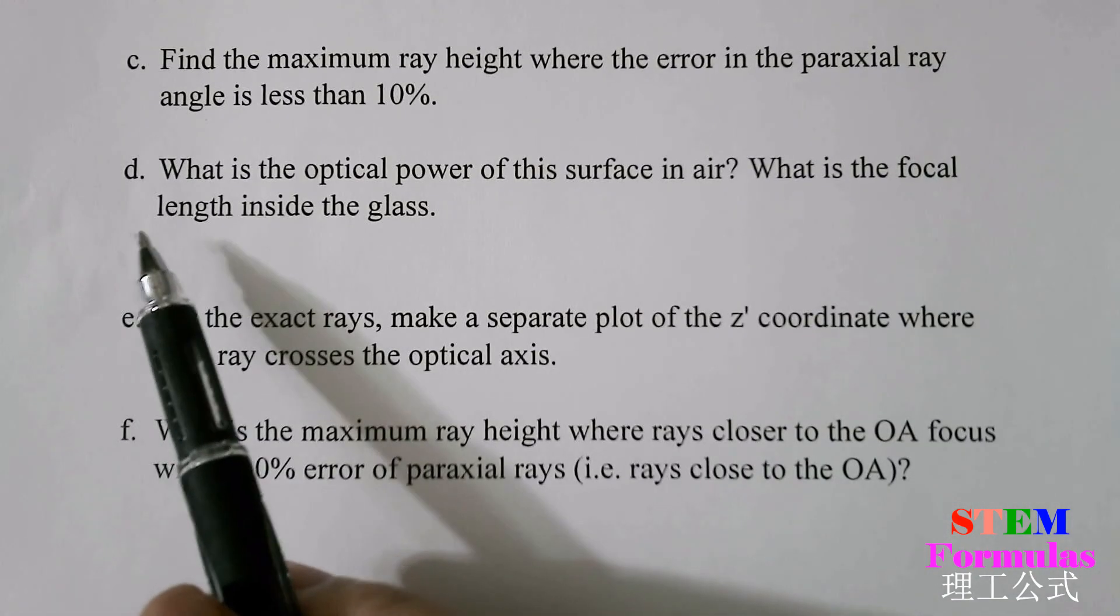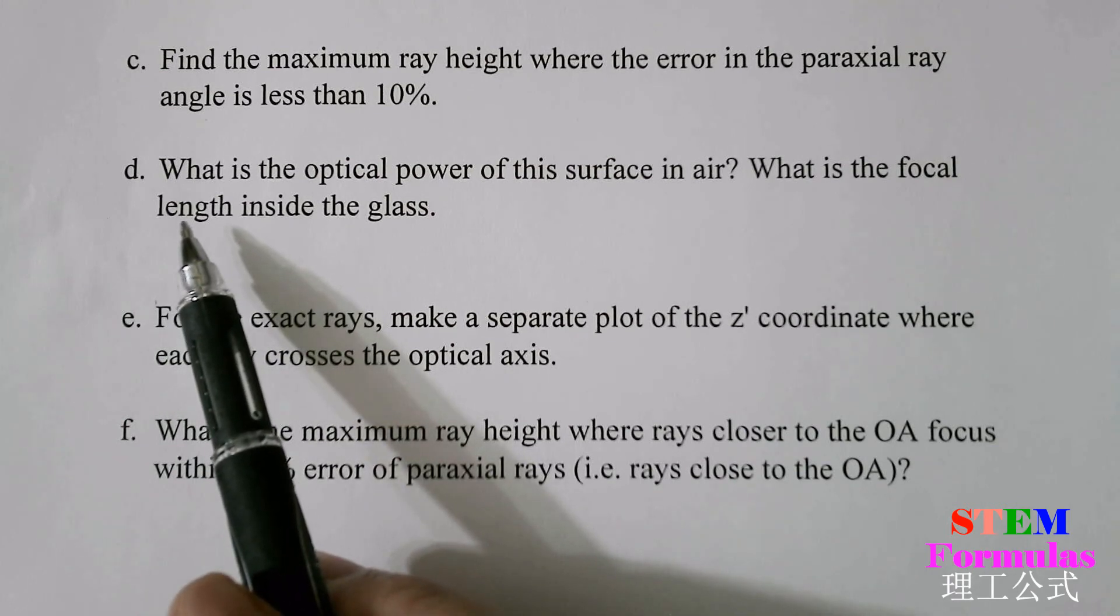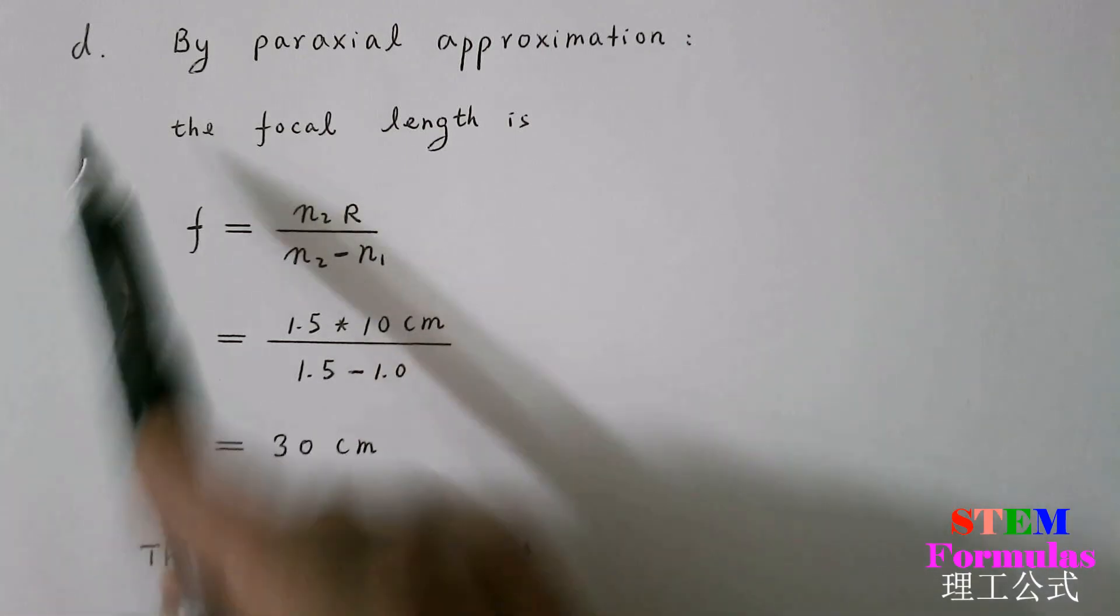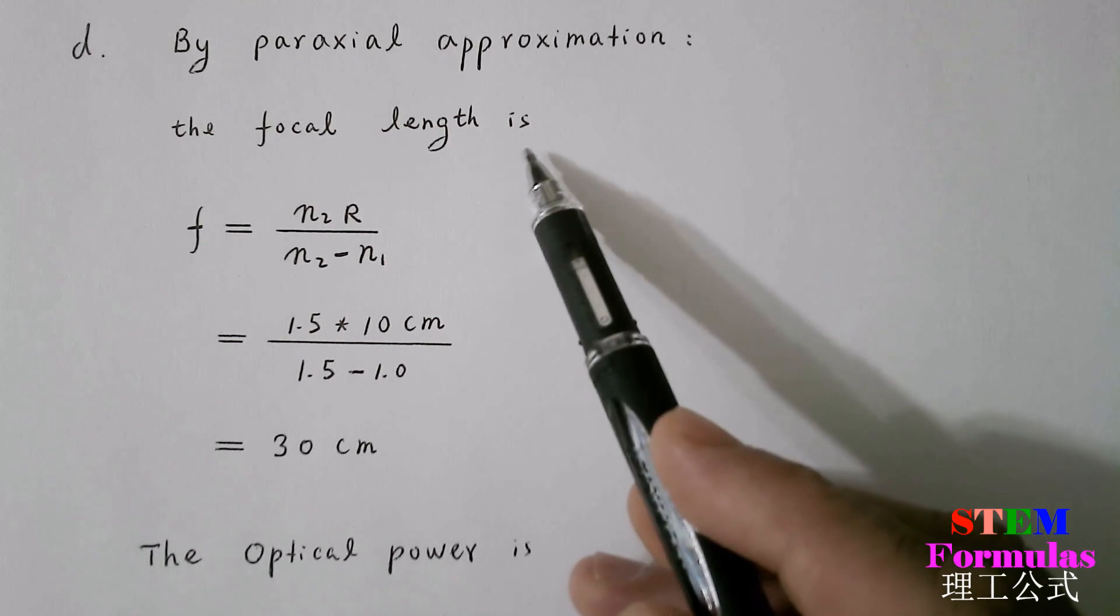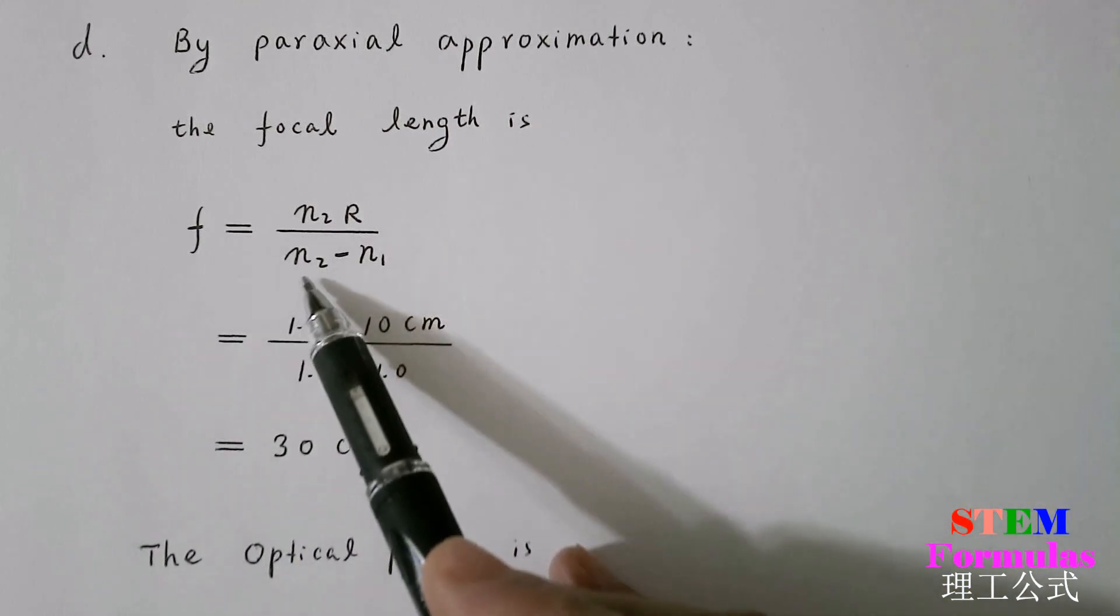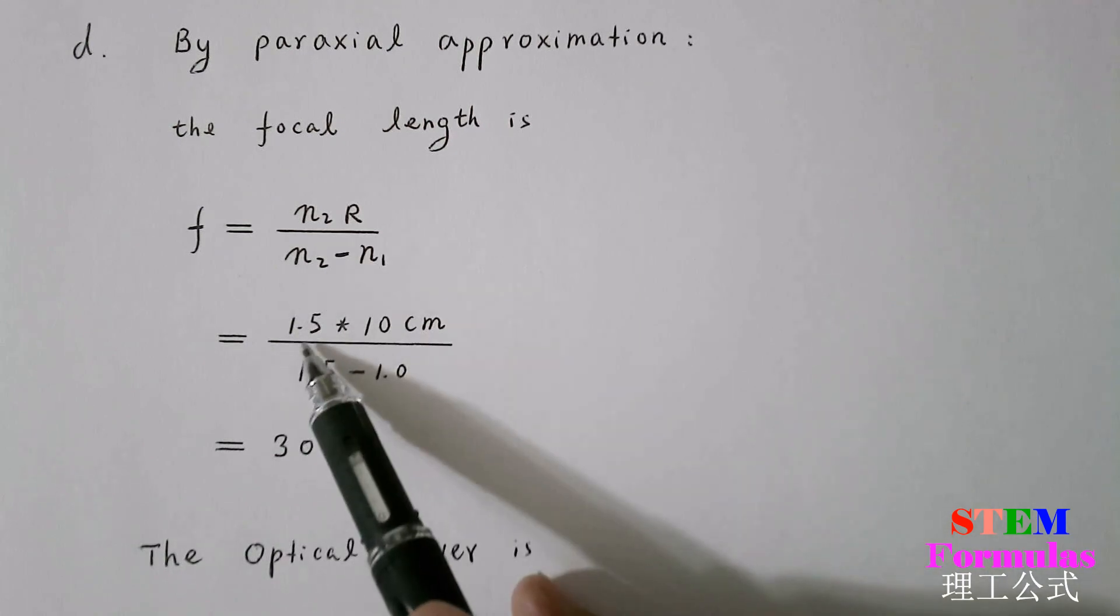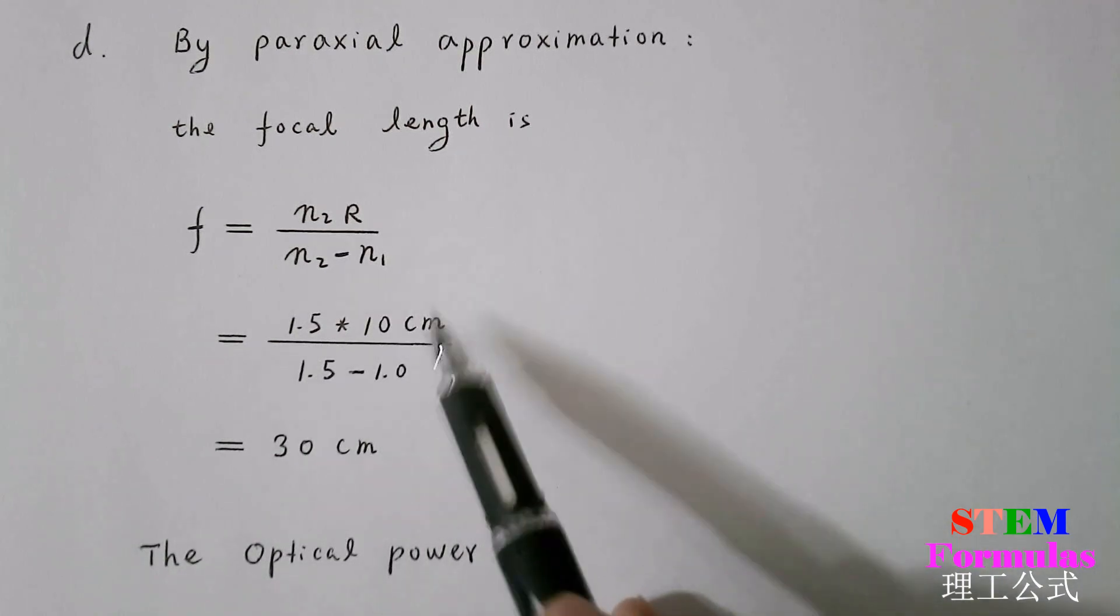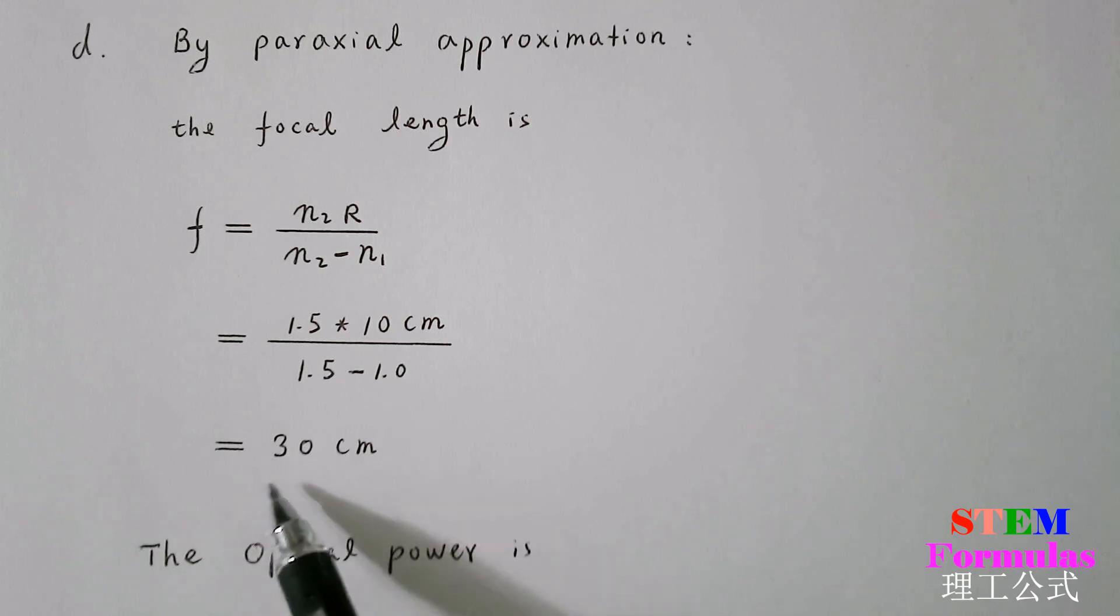For question D, by paraxial approximation, the focal length is given by f equal to N₂ times R divided by N₂ minus N₁. Let's substitute our numbers. So N₂ is 1.5, R equals 10 cm, N₂ is 1.5, N₁ is 1.0. The answer for f equals 30 cm.